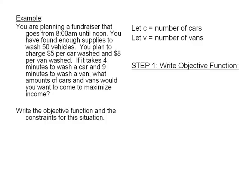Therefore, if we are ready to write our objective function, we then need to determine our objective, which in this case is to maximize profit. As we look through the information, we should notice that we earn $5 per car and $8 per van. Therefore, our profit will be 5 times C plus 8 times V.